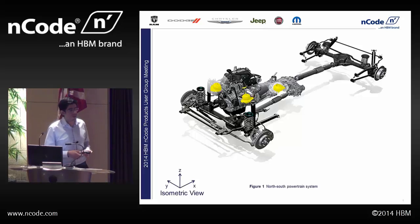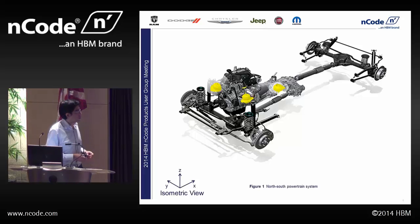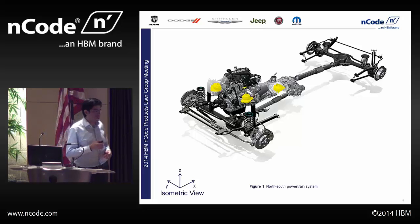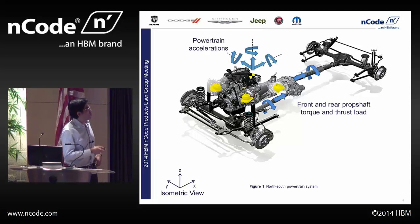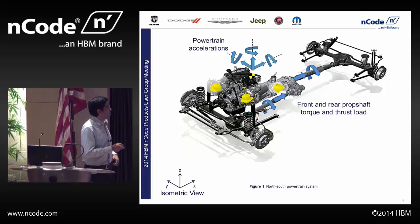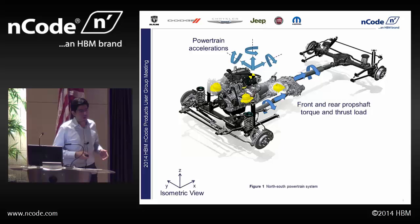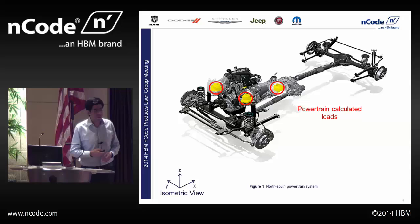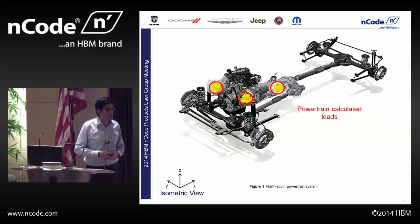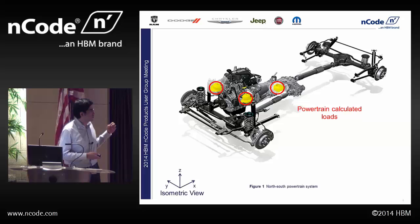Once we calculate the accelerations of the powertrain CG, we're going to build up our virtual model for the powertrain system. We're going to input the MOI properties for the powertrain, the stiffness rates for the powertrain mounts, and also introduce the torque and thrust load, which are measured from the test position, along with the calculated powertrain accelerations. Having all this information, we are going to run our analysis using the Adams solver. After running the analysis, we're going to get back an Adams REQ file, which will contain all the displacement forces, user request loads, and user requests.